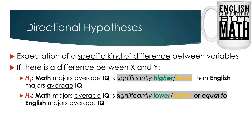That is in a nutshell how you write out directional hypotheses. Just like non-directional requires a two-tailed version of a stat, directional requires a one-tailed version of a stat. Remember that as a fact to memorize, and you'll know more about it as it comes up later in the class.